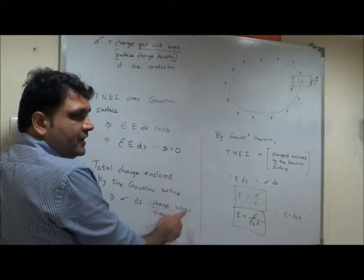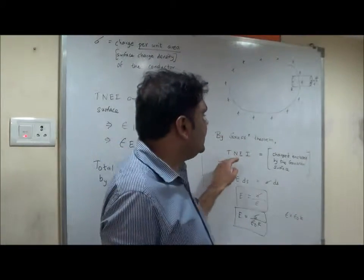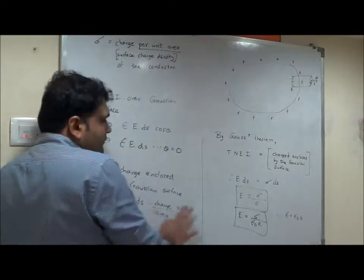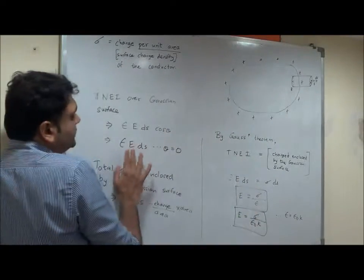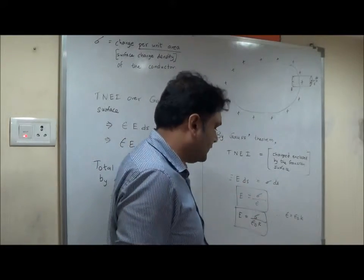Sigma into DS, charge per unit area into area, area area gets cancelled, we get total charge. By Gauss's law, TNI equal to charge enclosed by the Gaussian surface. Charge enclosed by the Gaussian surface was sigma into DS, TNI was epsilon E DS. So E equal to sigma by epsilon.